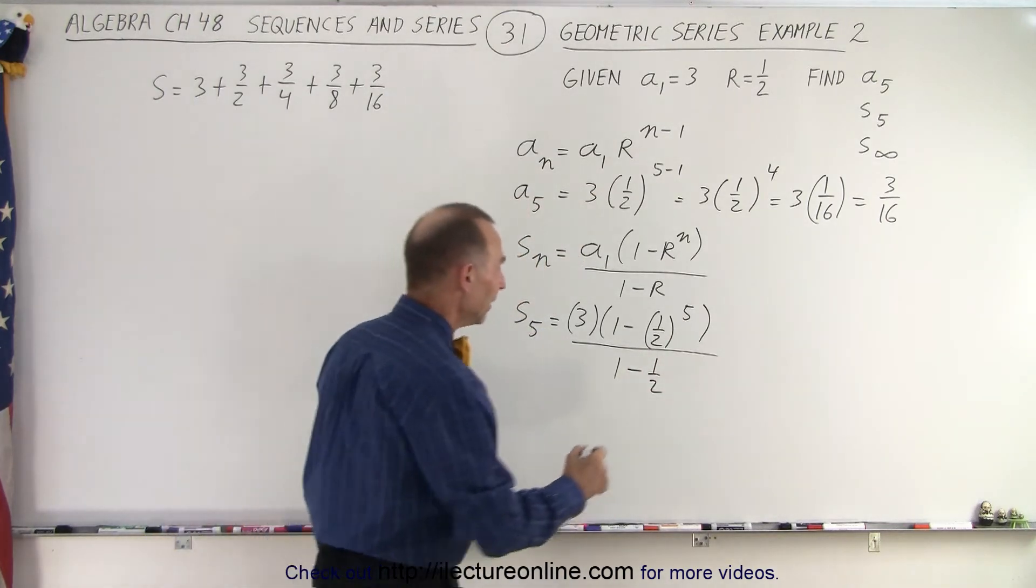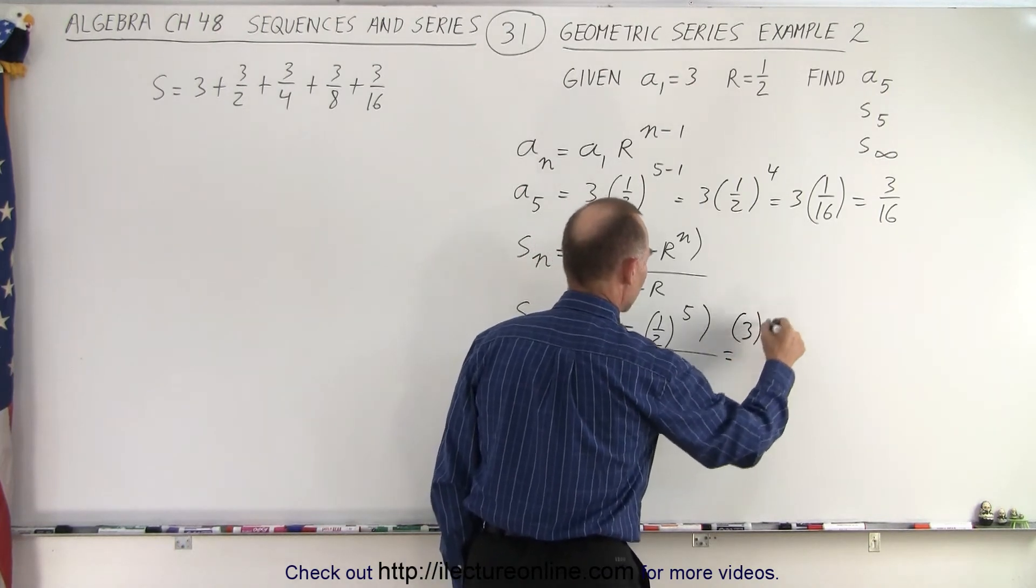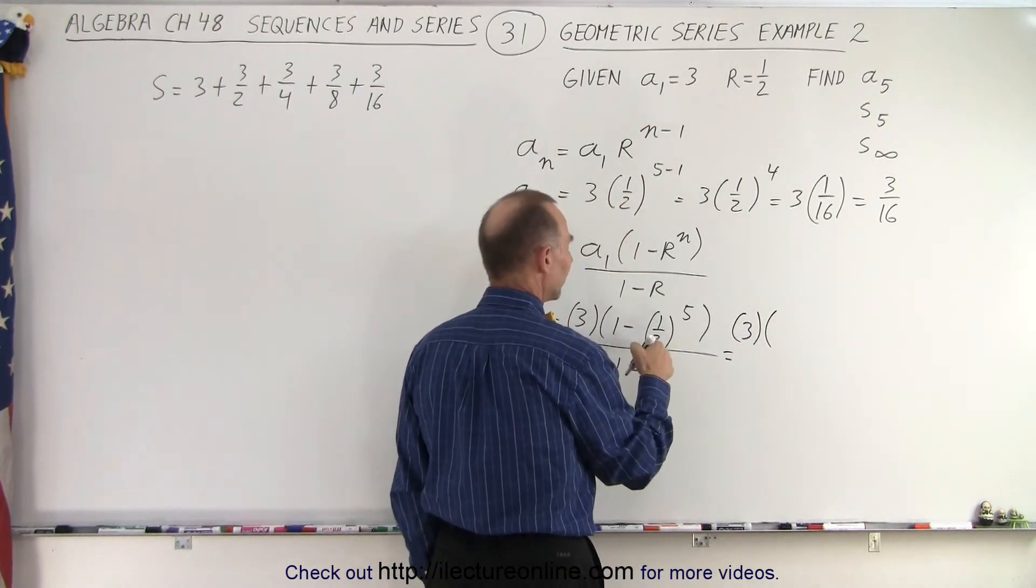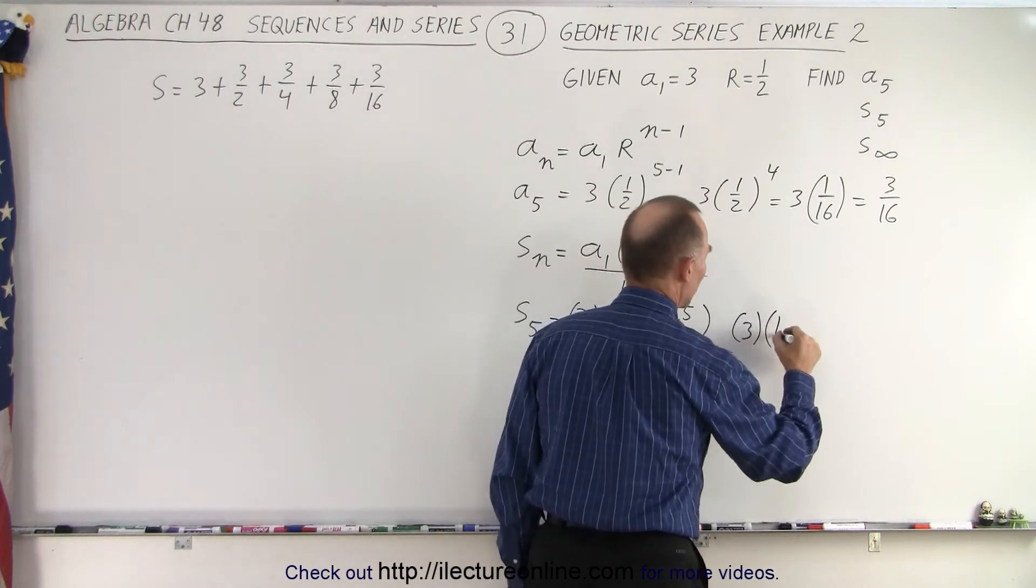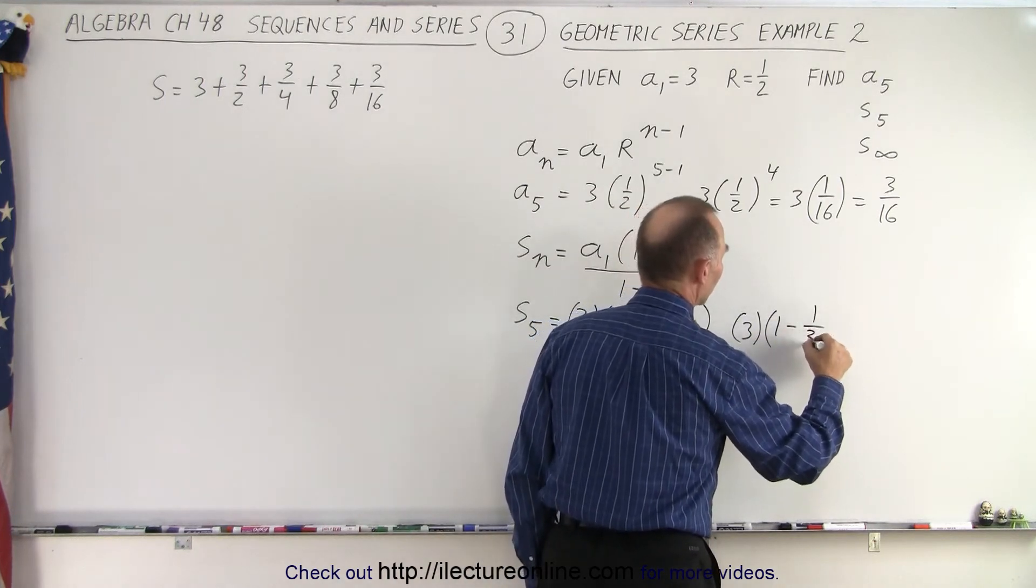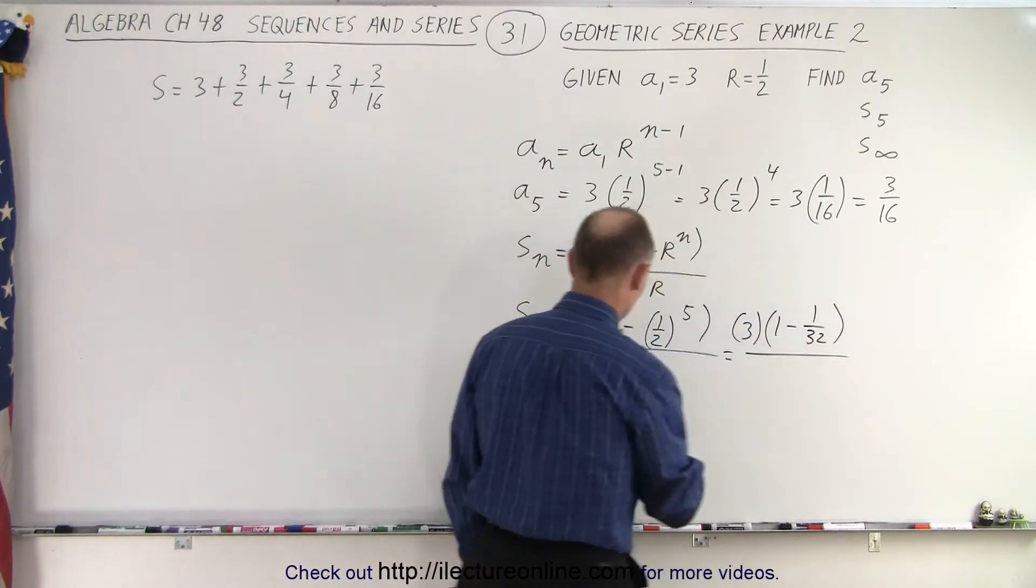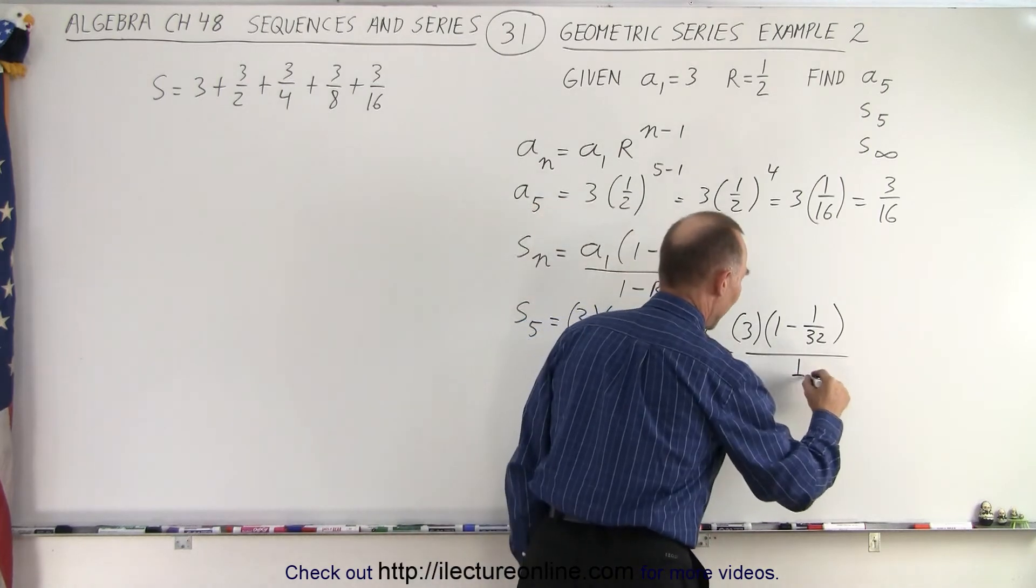Okay? Simplifying that, this is equal to the number 3 times 1 minus 1 half to the fifth power, that would be 1 minus 1 over 32, divided by 1 minus 1 half, which is 1 half.